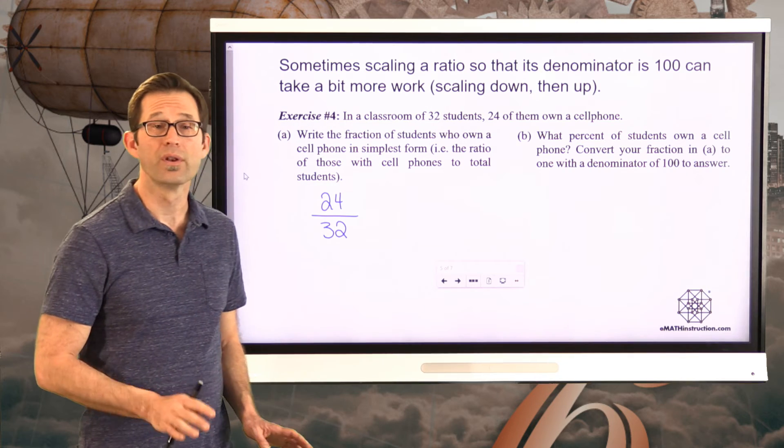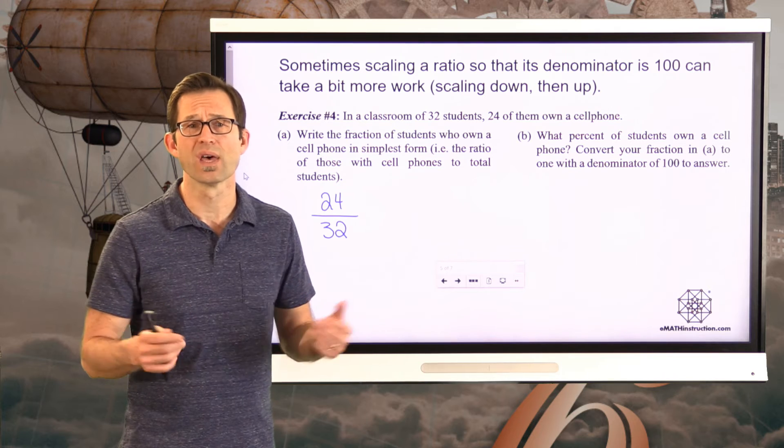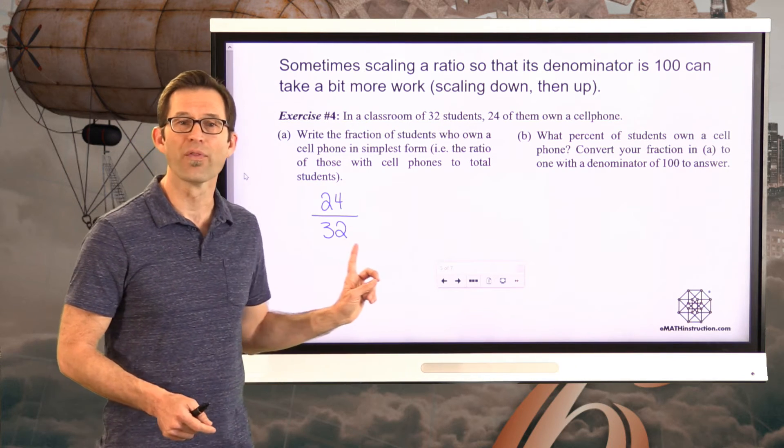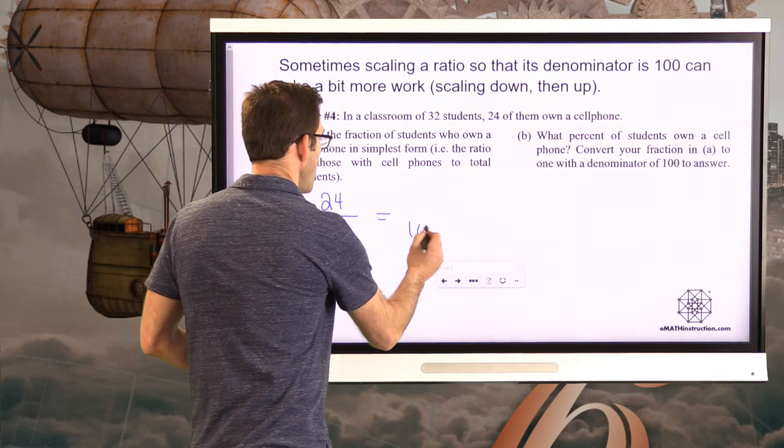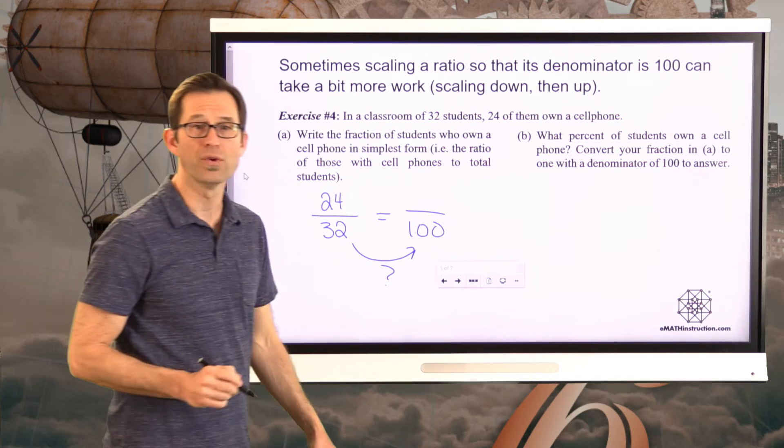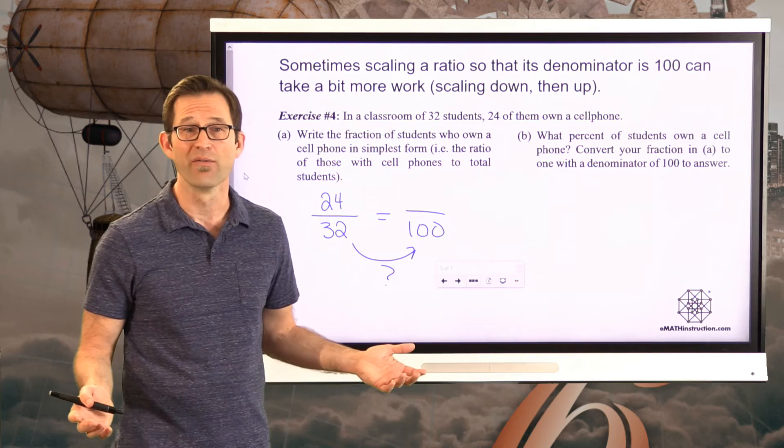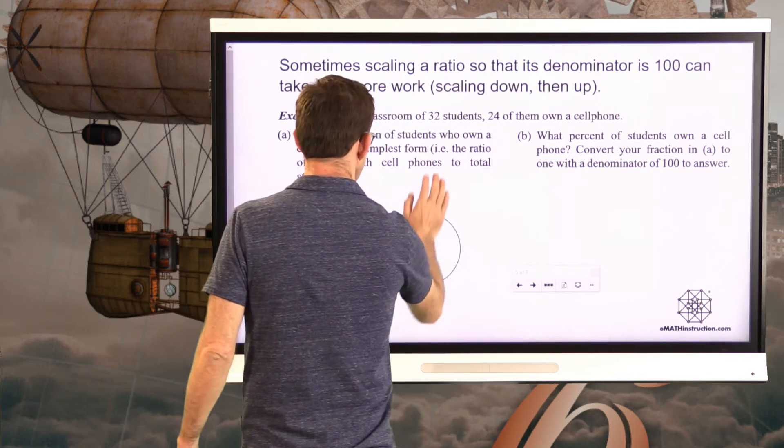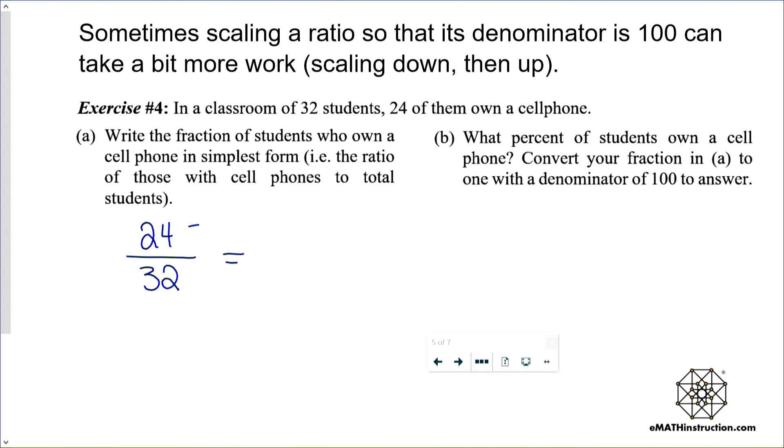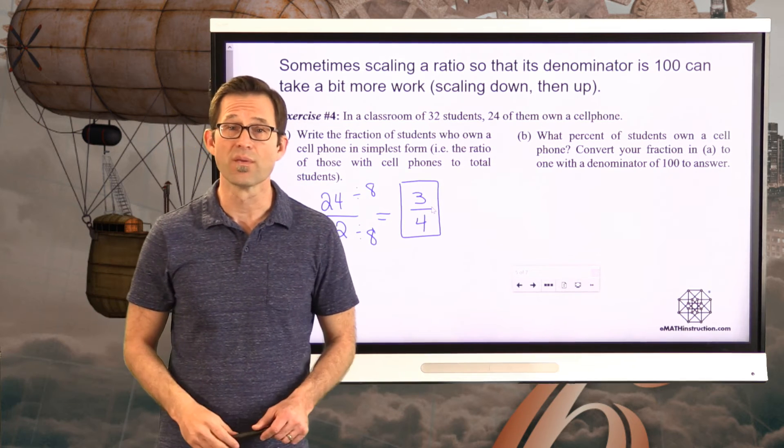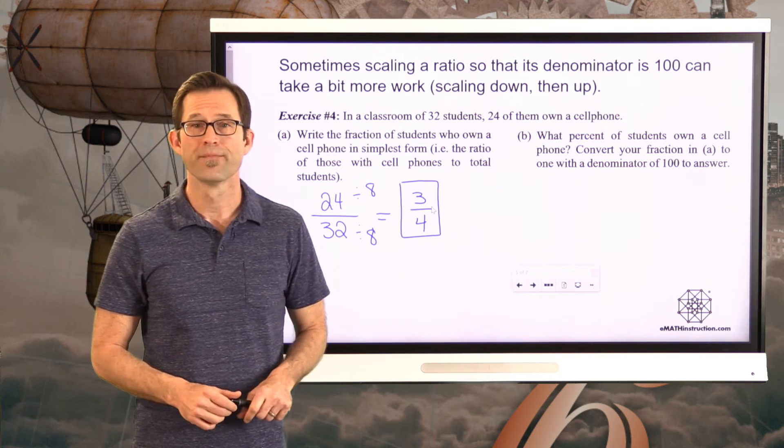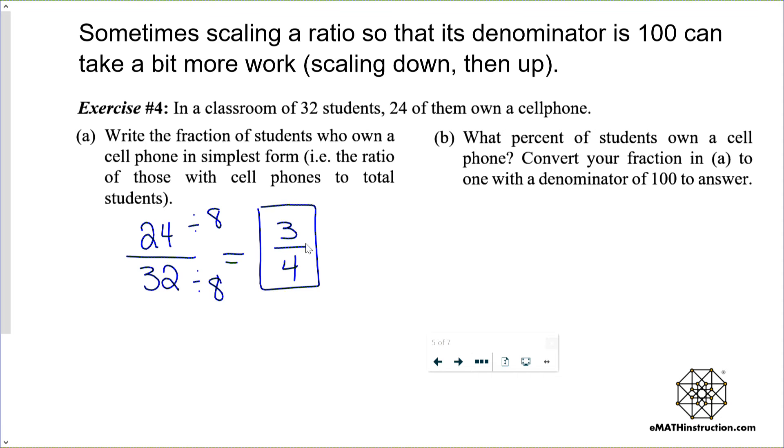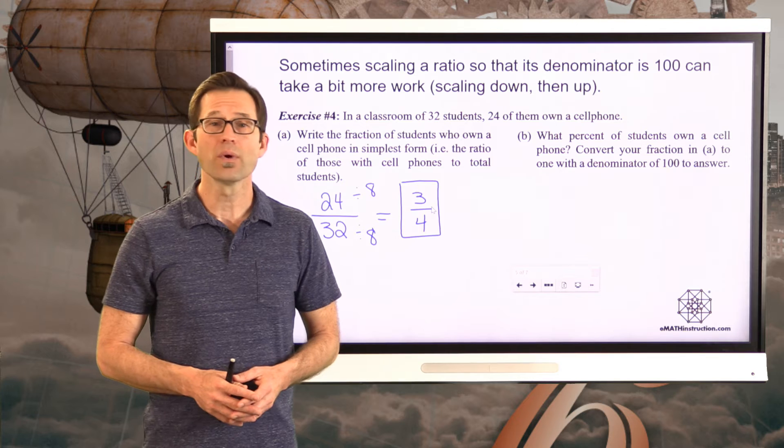All right. So the fraction of students who own a cell phone is always the number that own it divided by the total number. Now just for a moment before we reduce this, just for a minute, say I asked you what was the percentage of students who owned a cell phone? It would be pretty hard to scale this fraction so that it had a denominator of 100, because it would be a bit confusing about what you should multiply 32 by to get 100. I would even have to work on that quite a bit. So this scaling would be quite challenging. On the other hand, if you did what was asked for in letter A, you could scale this ratio down by dividing both of these by 8, and you'd have the simplest ratio of 3 to 4, or 3/4. So 3/4 of the students in this class own a cell phone.